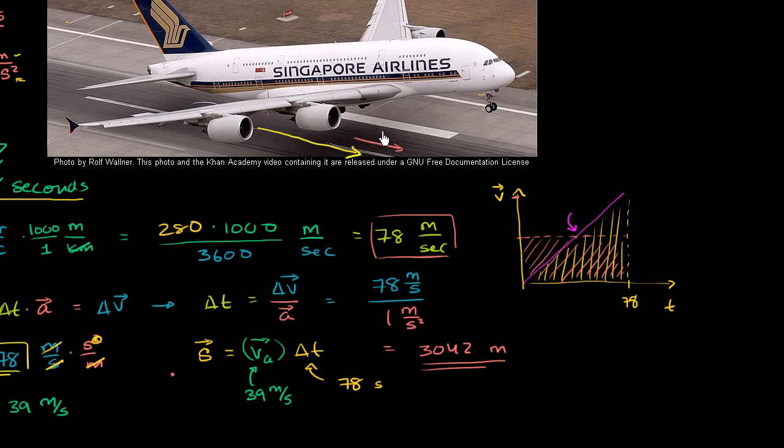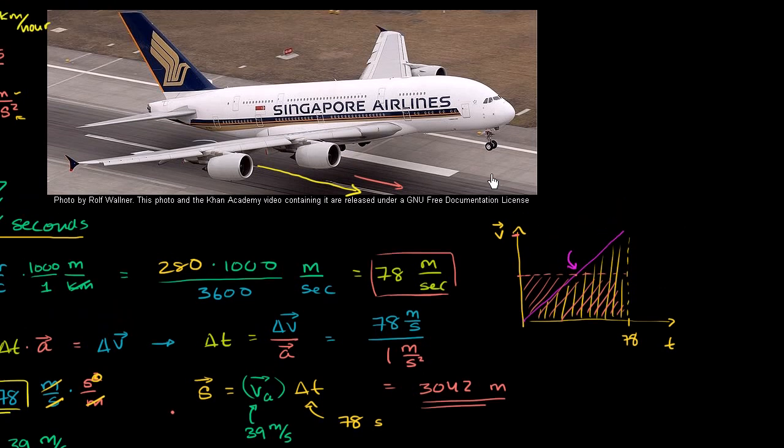So you need a runway of over 3,000 meters for one of these suckers to take off, or over 3 kilometers, which is like about 1.8 or 1.9 miles just for this guy to take off, which I think is pretty fascinating.